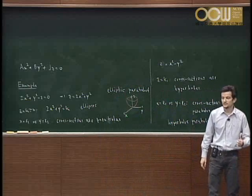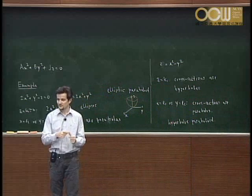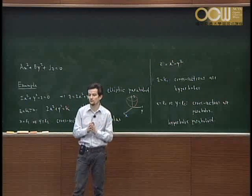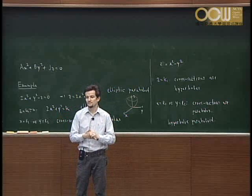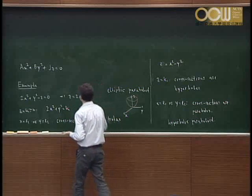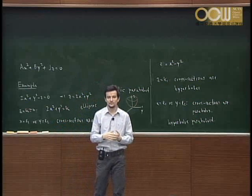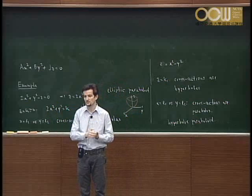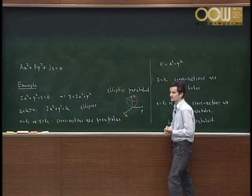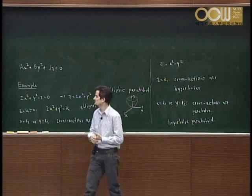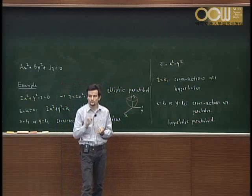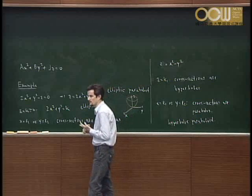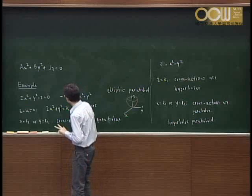This classification is analogous to what you have done in high school. In the plane, quadratic equations in two variables give three types: ellipse, hyperbola, and parabola. In three-dimensional space, you get six corresponding types. Maybe in high school the connection wasn't emphasized, but looking at simple quadratic equations in three variables and asking which surfaces arise, you see there are essentially six types.